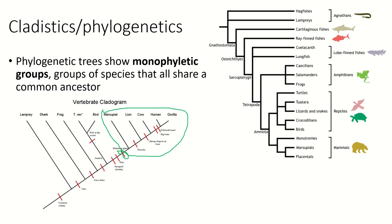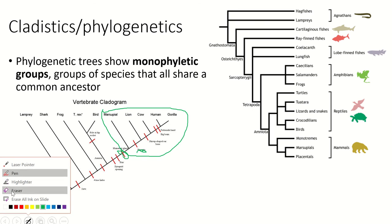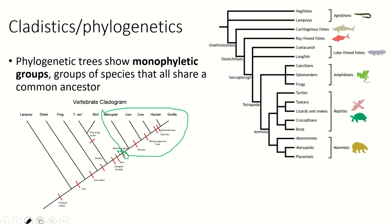We can mark on our phylogenetic tree which traits evolved when. Marsupials are mammals — they have mammary glands and they have hair — but they don't have a placenta. The placenta developed later, so everything above this line has a placenta.